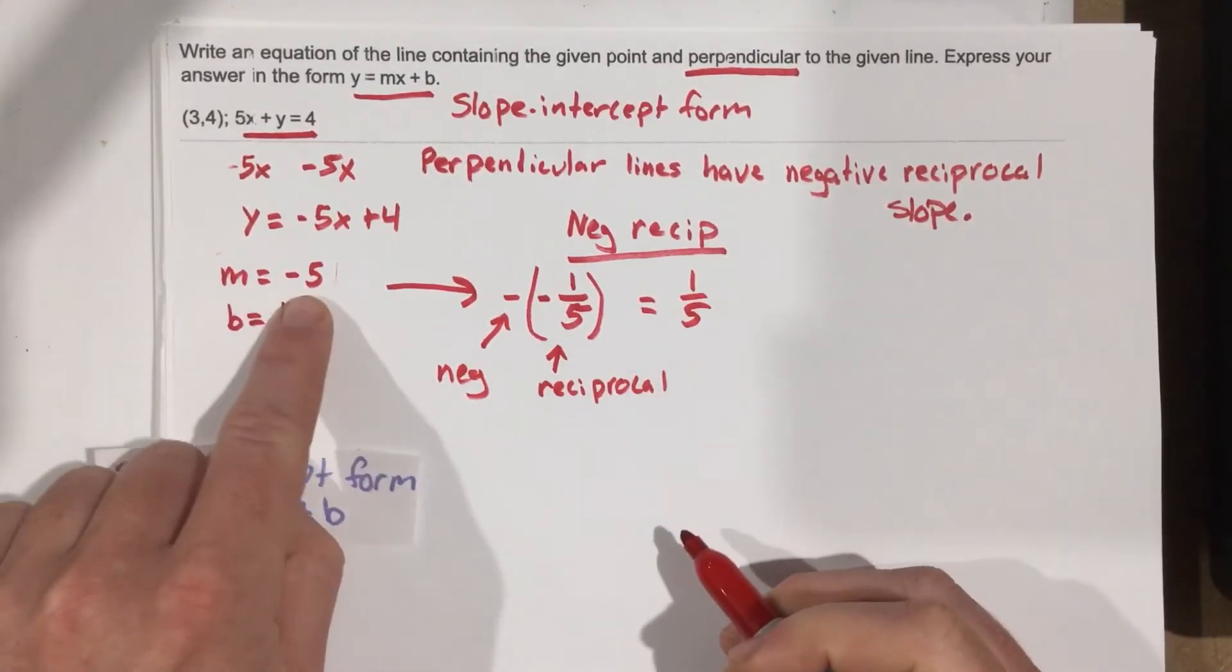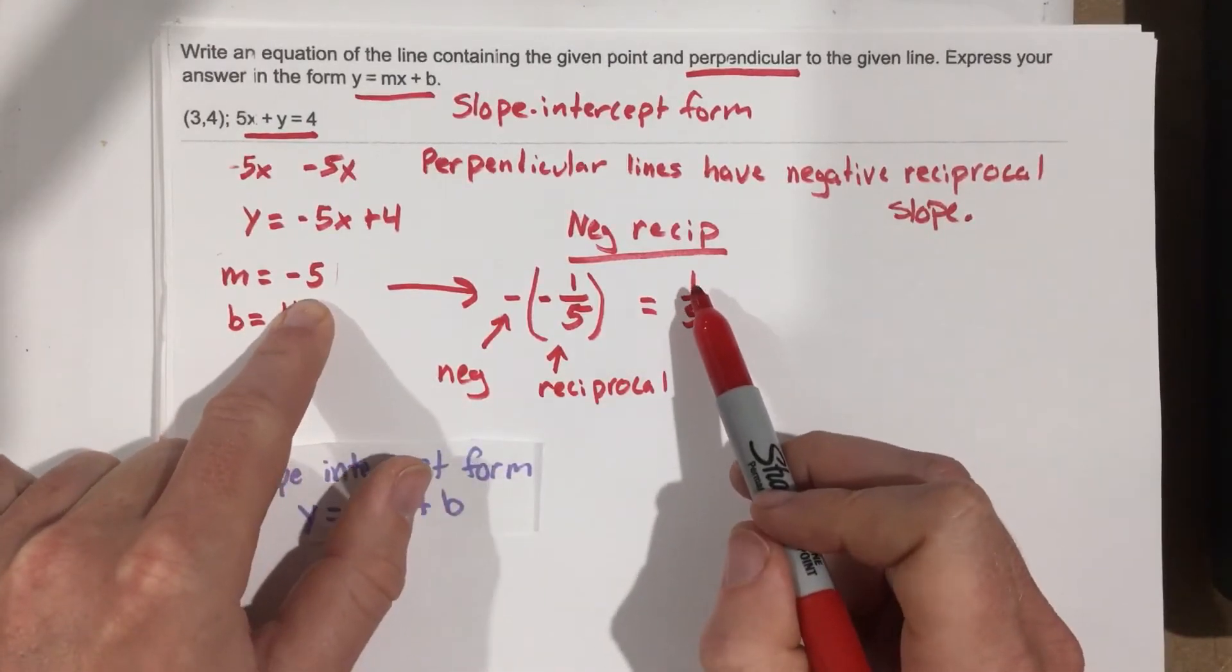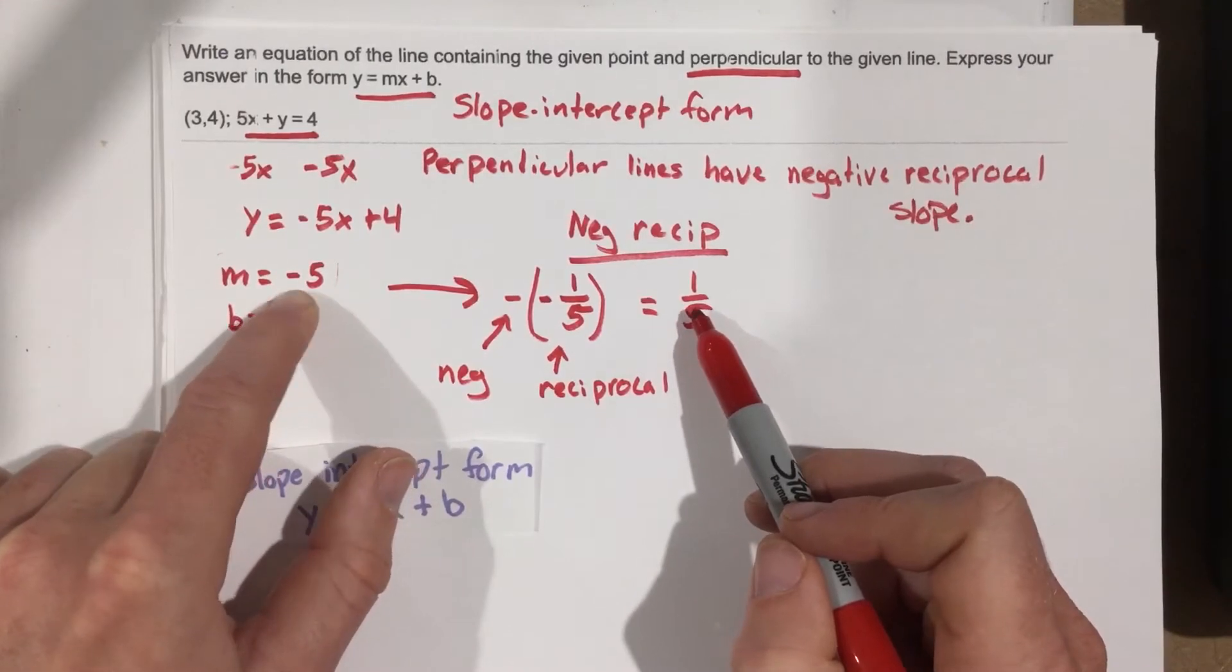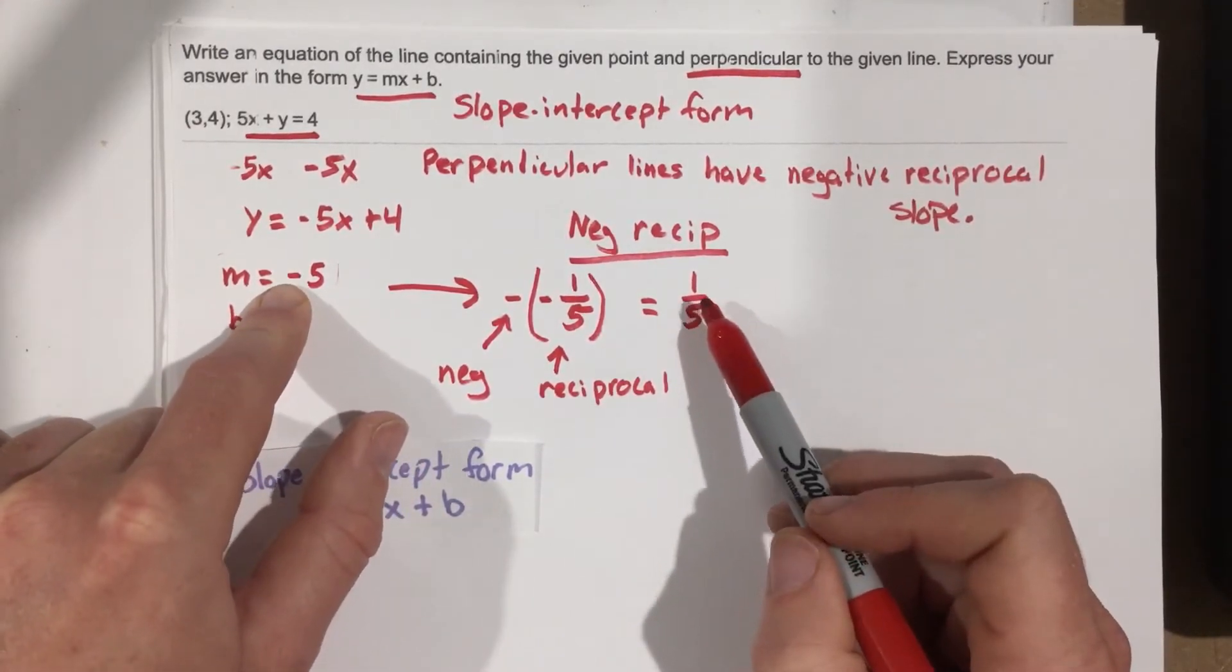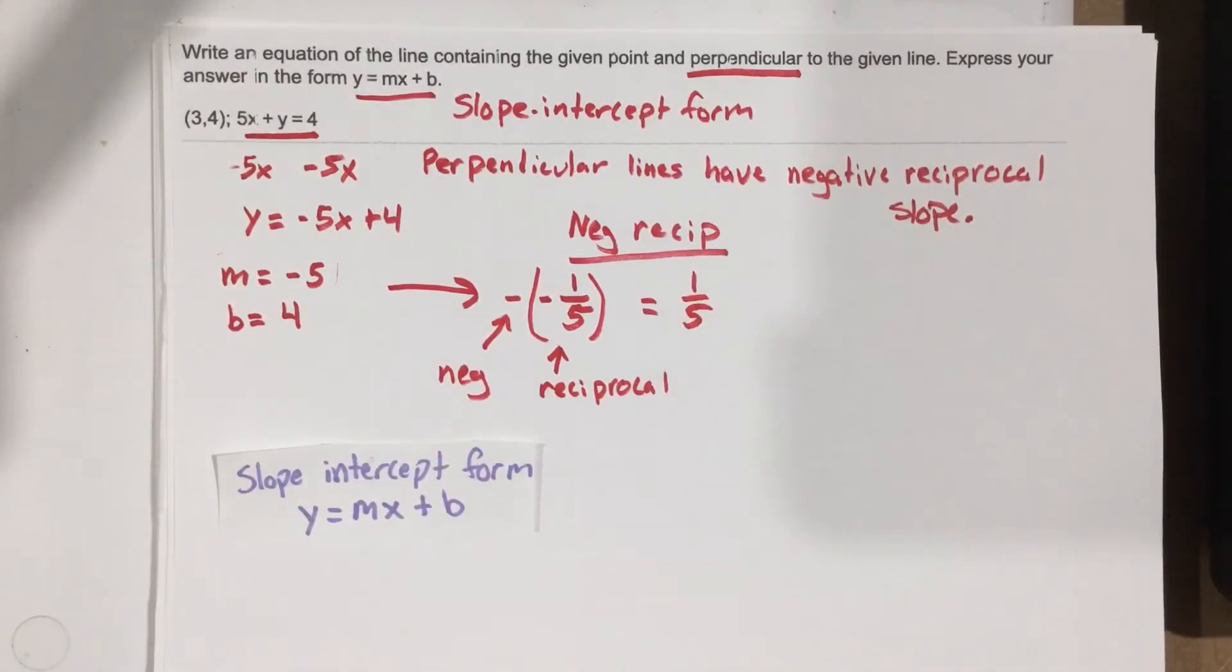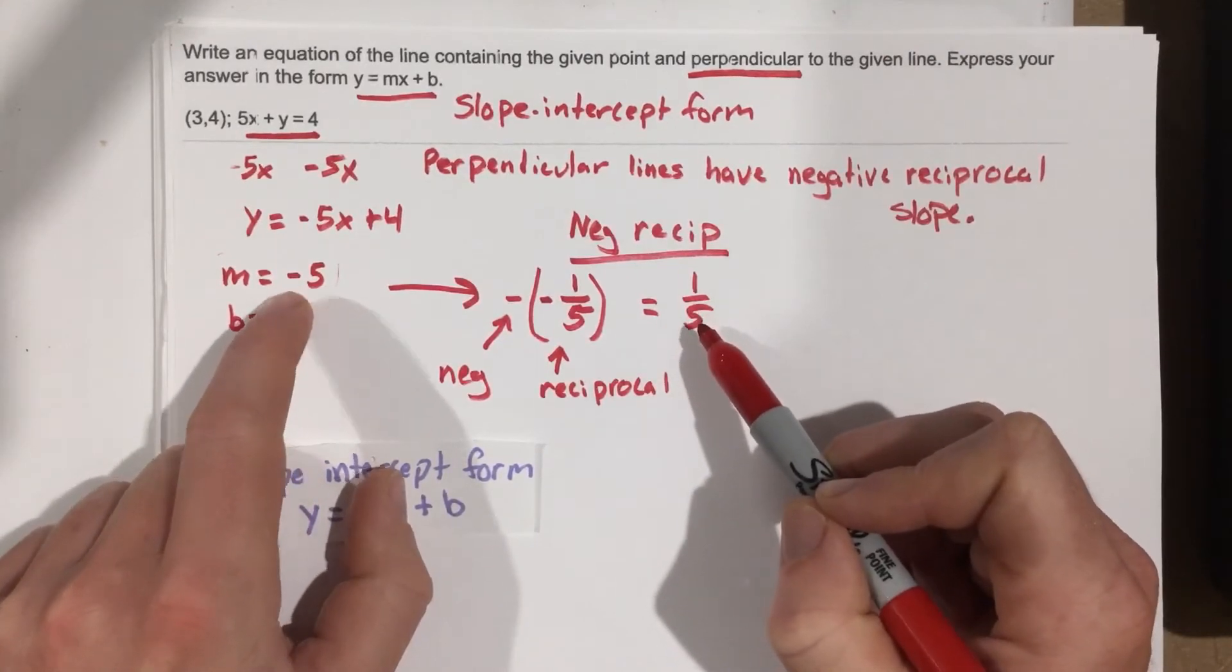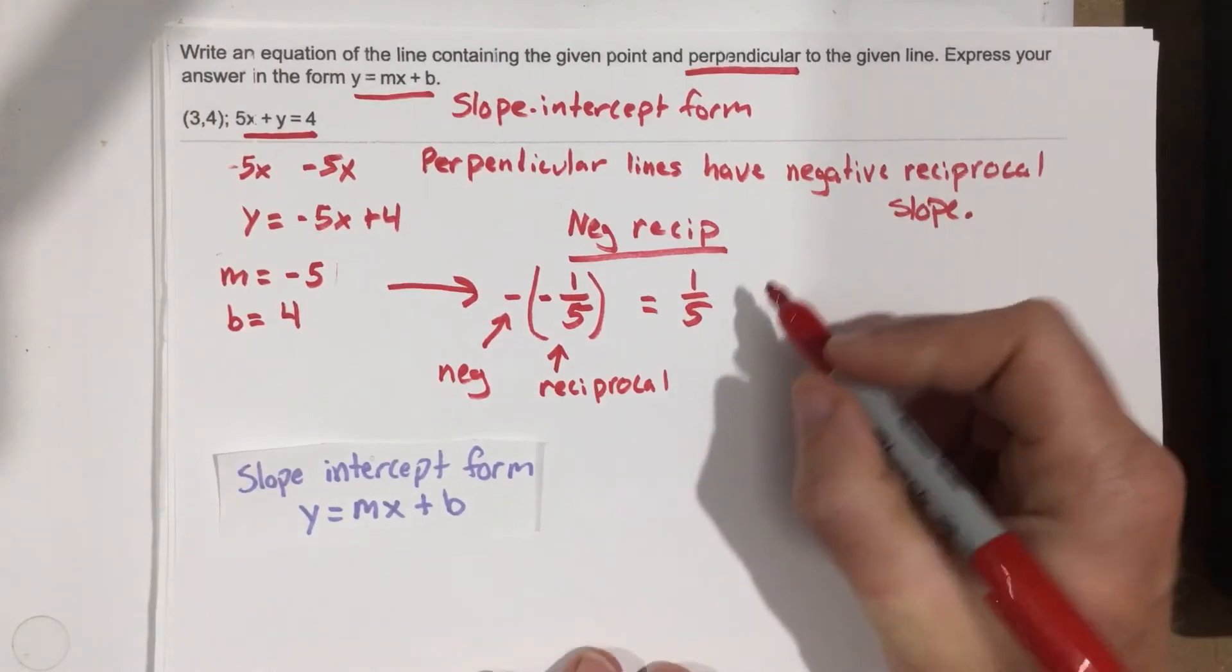So notice this slope is negative 5. This slope is the reciprocal, which is 1 fifth. But the negative cancels out. So I have a negative slope and then a positive slope. And the 5 is a reciprocal of 1 fifth. I know I have a 90 degree angle, and I actually have a perpendicular slope now.